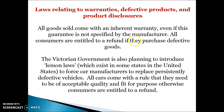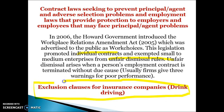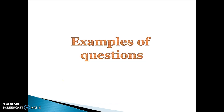Laws relating to warranties and defective products: all goods come with an inherent warranty, and you must be entitled to a refund if they're not up to quality. There are also Lemon Laws, which force manufacturers to replace persistently defective vehicles. All cars must be of acceptable quality and fit for purpose, or you're entitled to a refund. Contract laws allow the government to remove unfair dismissal laws and put people on individual contracts so it's easy to let people go. Exemption clauses prevent moral hazard — for example, you can't claim insurance if you were drink driving at the time, and the same applies to speeding or being on your phone.